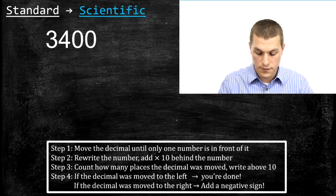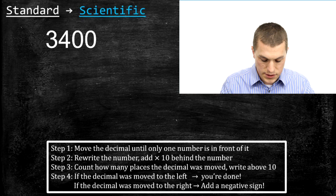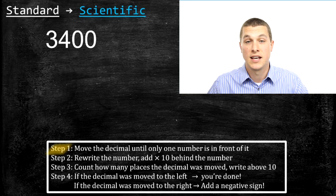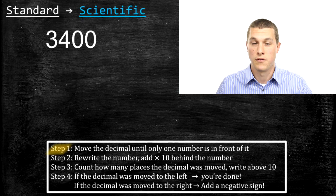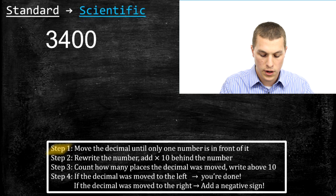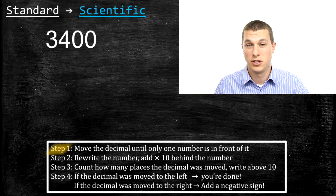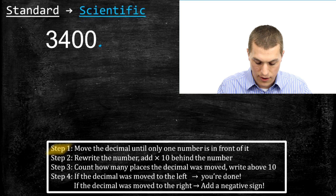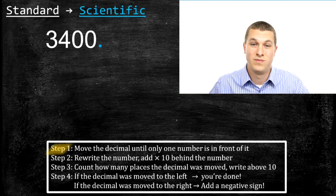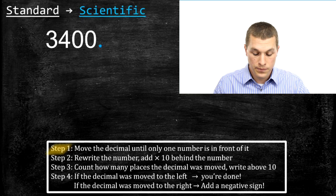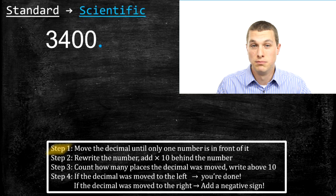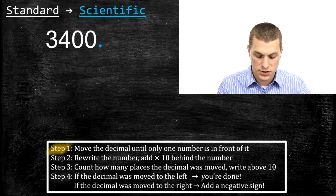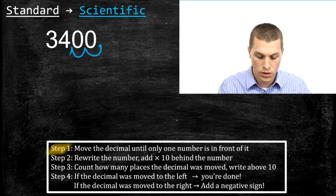I've summarized this process in four steps. Step one says: move the decimal until there's only one number in front of it. Now 3,400 doesn't have a decimal explicitly written, and that's pretty normal — if there's no decimal written, it's always just at the very end. So that's 3,400 with the decimal at the end. We're going to bounce this decimal over to the left one, two, three times, so our decimal ends up there.